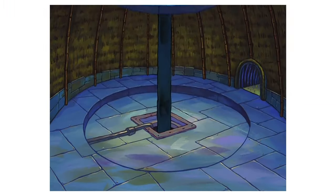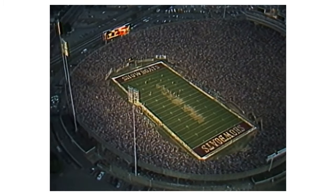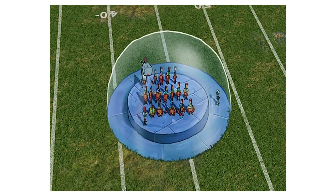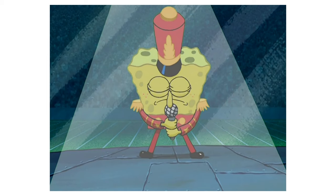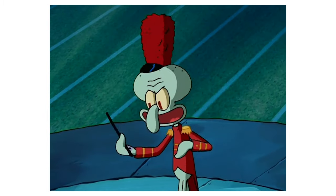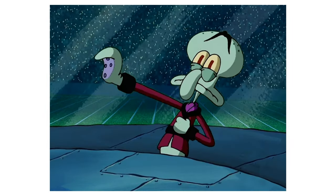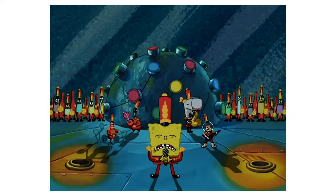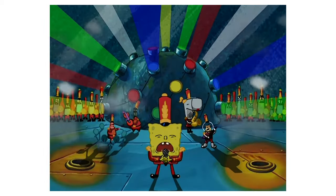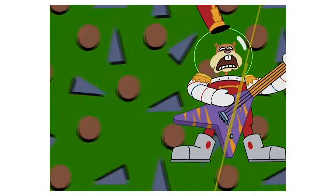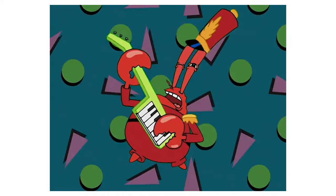Towards the end of the episode, when the glass dome containing the band rises to the field, it is approximately 10 yards in diameter and positioned just off the center of the field. But in later shots from within the dome looking outwards, it shows an entirely different perspective with many more white lines than would be expected. Then, during the band's performance of Sweet Victory, when the main cast is shown, Mr. Krabs is playing a purple guitar — but during the panning, the guitar is green.